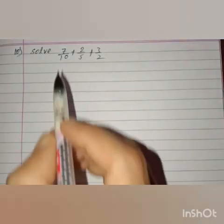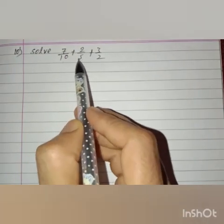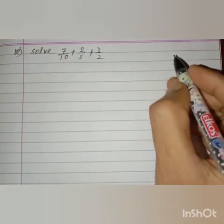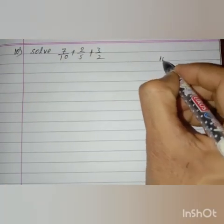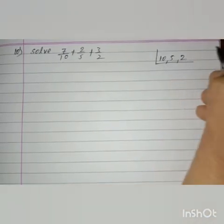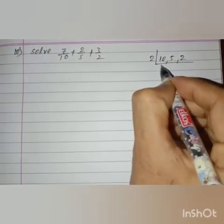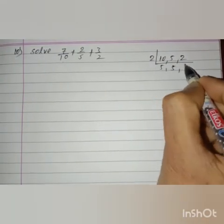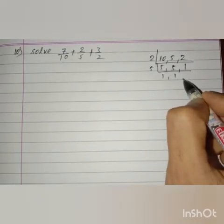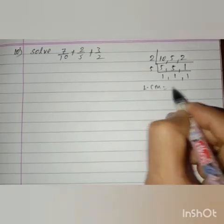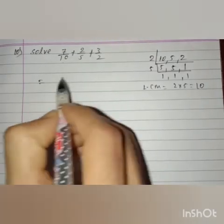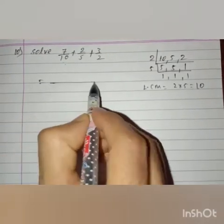Next, question number 10: 7 by 10 plus 2 by 5 plus 3 by 2. Let us add these three unlike fractions. First, take the LCM of the denominators 10, 5, and 2. Since 10 and 2 are divisible by 2: LCM is 2 into 5, that is 10. The LCM of 10, 5, and 2 is 10.